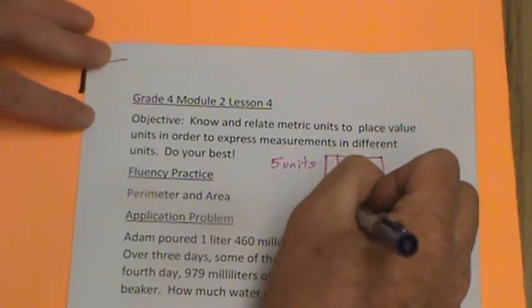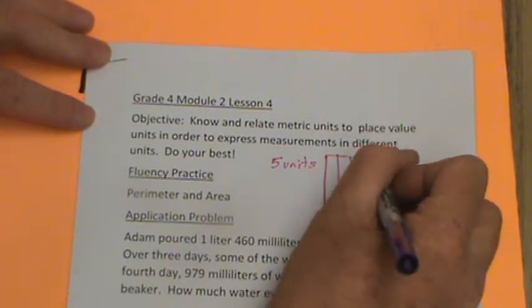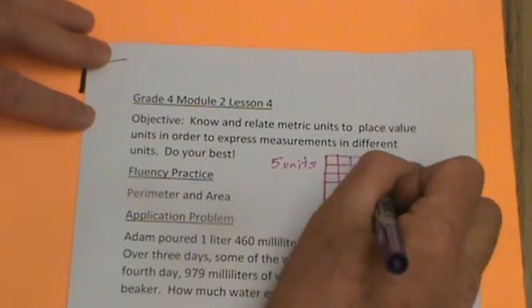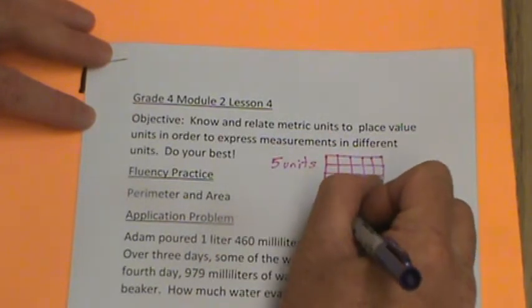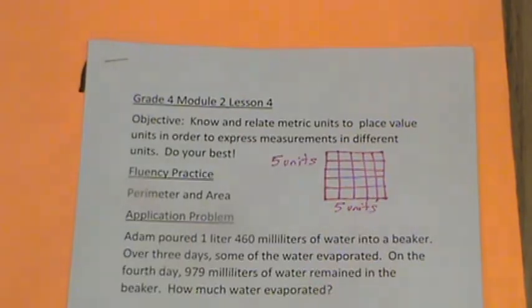Go ahead and make a square with me. We'll go one, two, three, four, and five. And then we'll go across where it's one, two, three, four, and five. So we can see that it's five units this way and five units this way. So we're going to try to find out how many square units there are, okay?